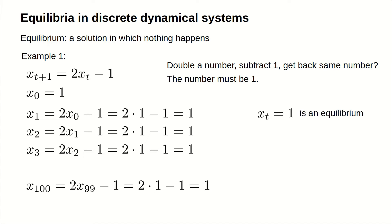We say that the solution x sub t equals 1 is an equilibrium of the dynamical system x sub t plus 1 equals 2 times x sub t minus 1. For this equilibrium solution, no matter the value of t, x sub t is always 1.